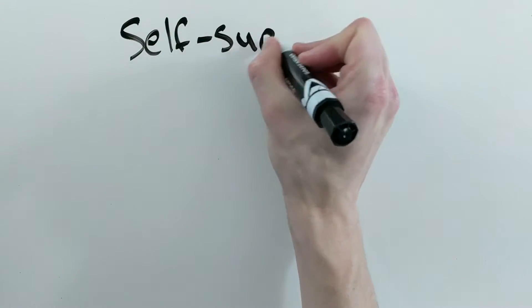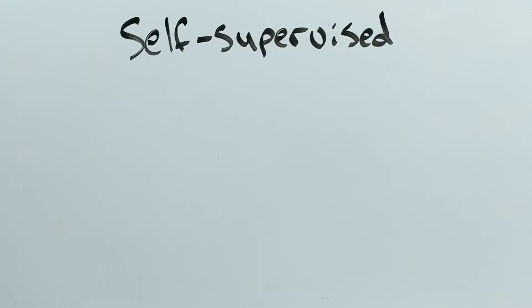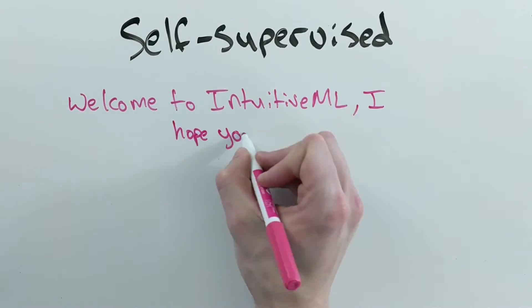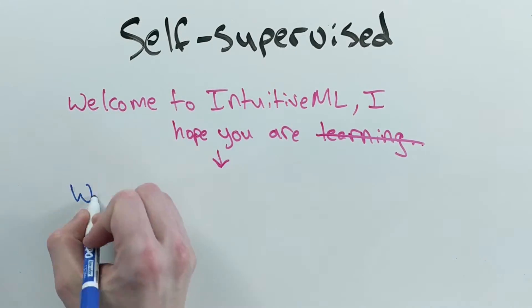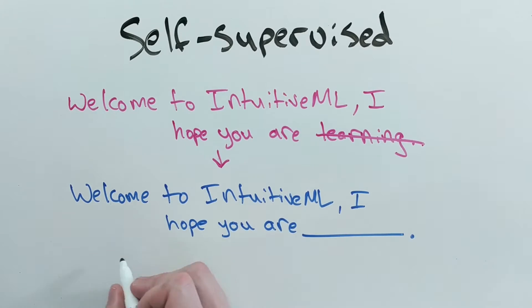Self-supervised learning is when you reformulate an unsupervised learning problem as a supervised one. For example, given a sentence, you might remove a word and then try to make your model learn to predict the missing word.